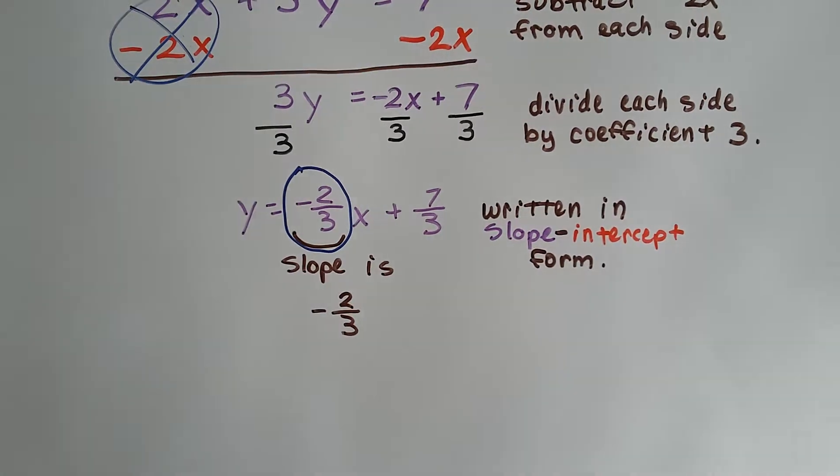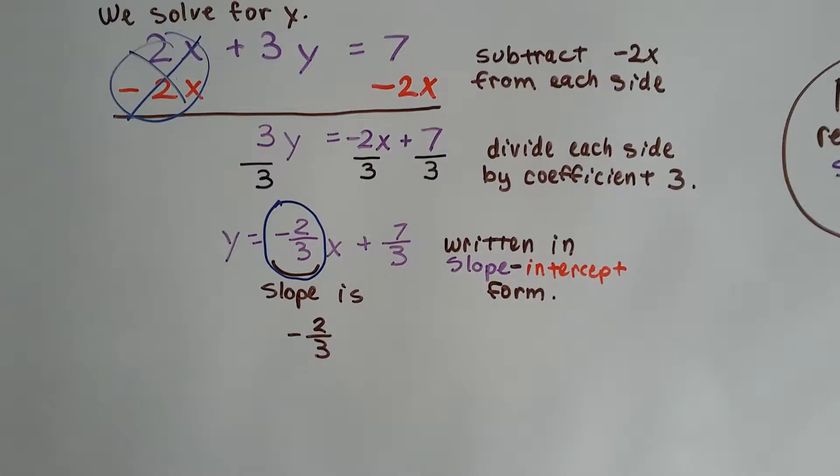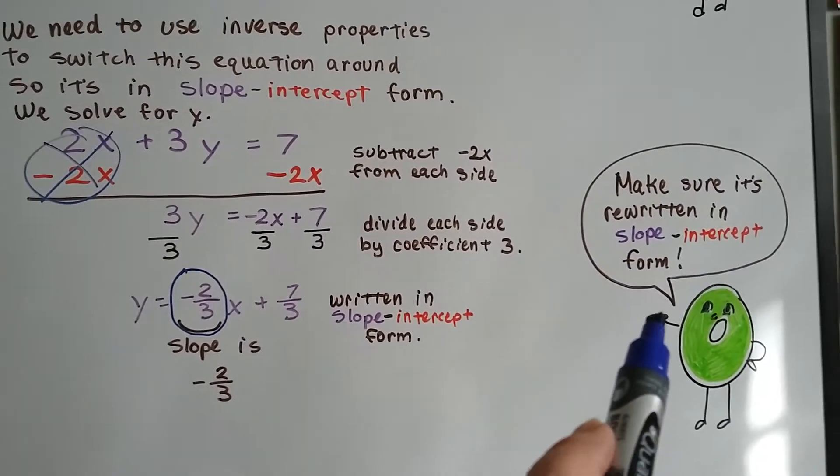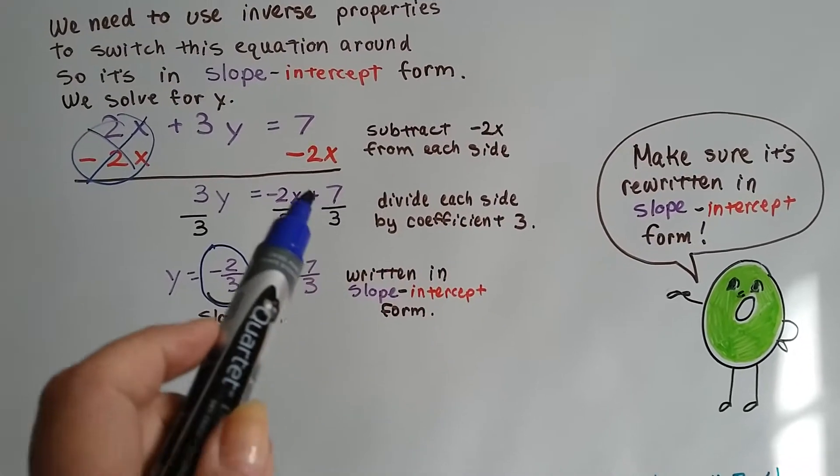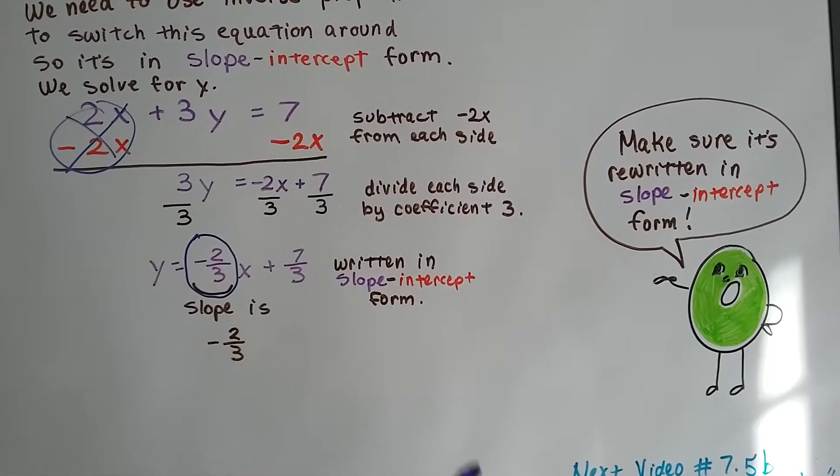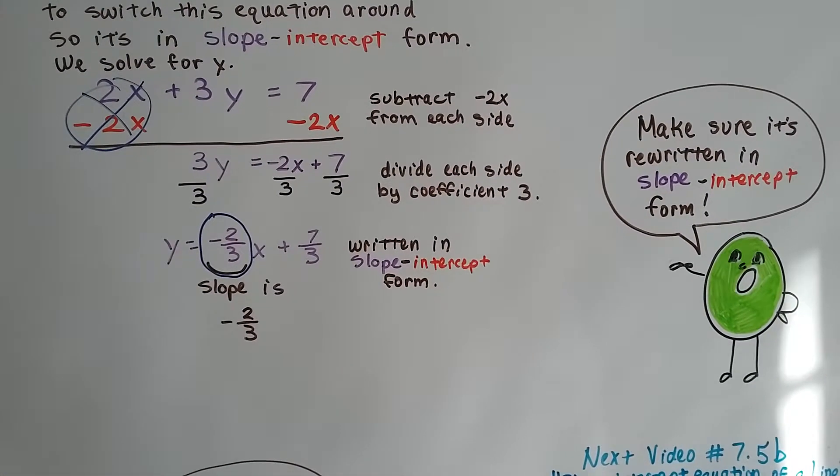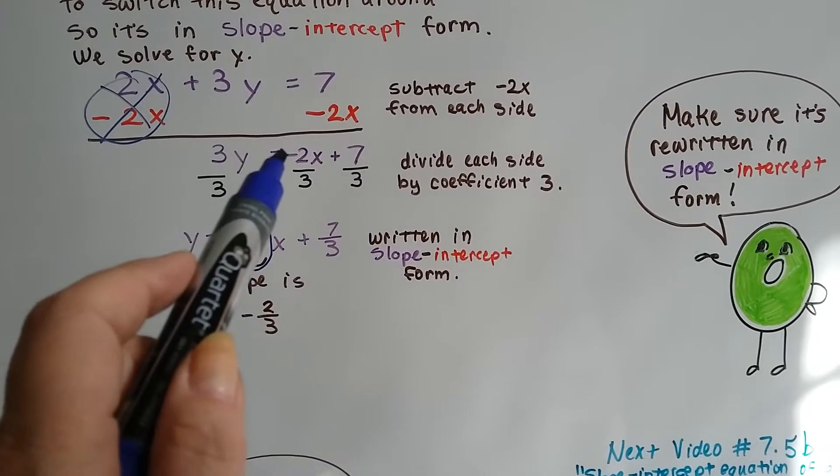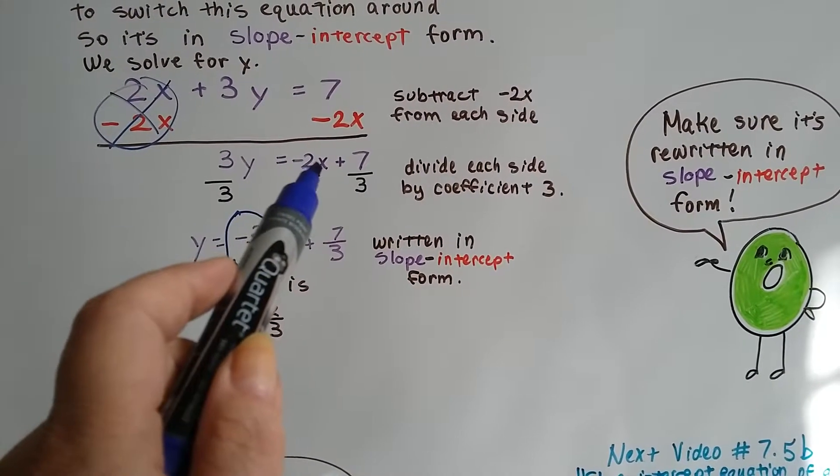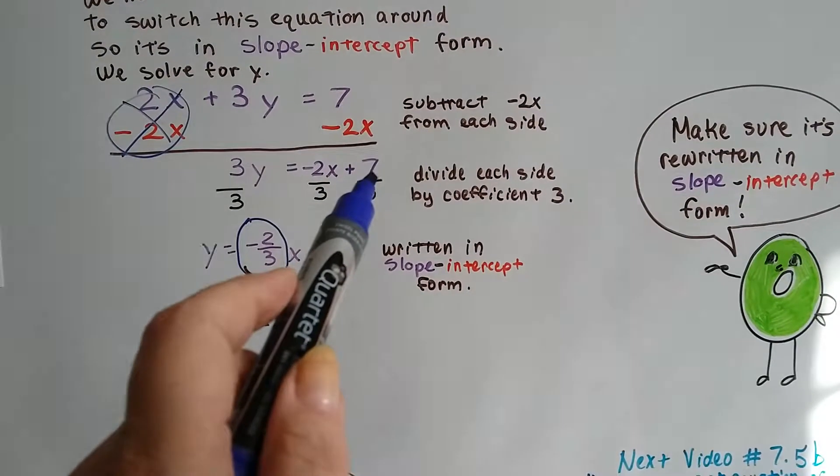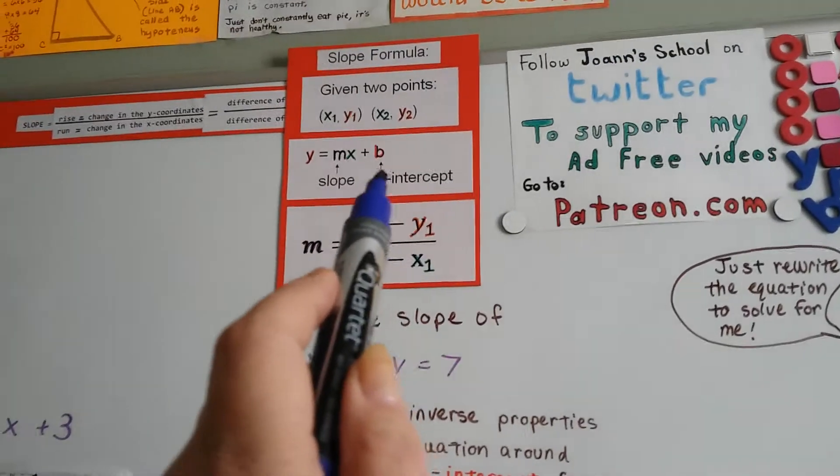It's the coefficient for x. It's a fraction coefficient. We just need to make sure that when we're rewriting this that we do it in slope-intercept form. You don't want to put 7 minus 2x. That wouldn't be in slope-intercept form. We need the 2x to be up here, the coefficient and the x to be up here, and then the y-intercept by itself.